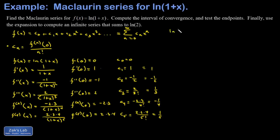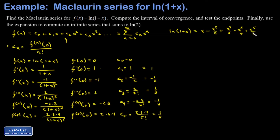So we arrive at the infinite series representation of natural log of 1 plus x. It's x minus x squared over 2 — I'm just plugging my cn's into my original proposal — plus x cubed over 3, minus x to the 4th over 4, plus x to the 5th over 5, and so on and so on.